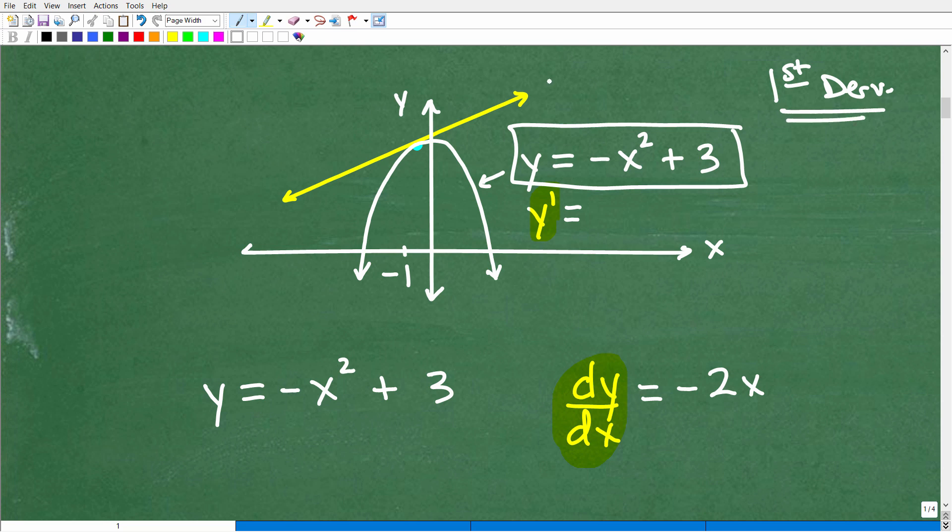But what does that mean? Well, if I find the first derivative of this equation, which is basically a variable or an equation representation of this parabola, the first derivative is an equation of the slope of a tangent line. So in other words, I can find the slope at this point. I can find a slope at this point. I can find a slope over here. Doesn't make a difference. If I have the first derivative, I can find a slope anywhere along this curve.